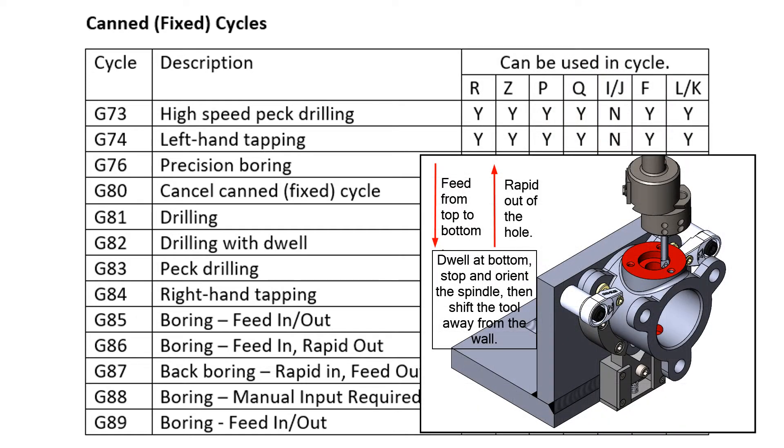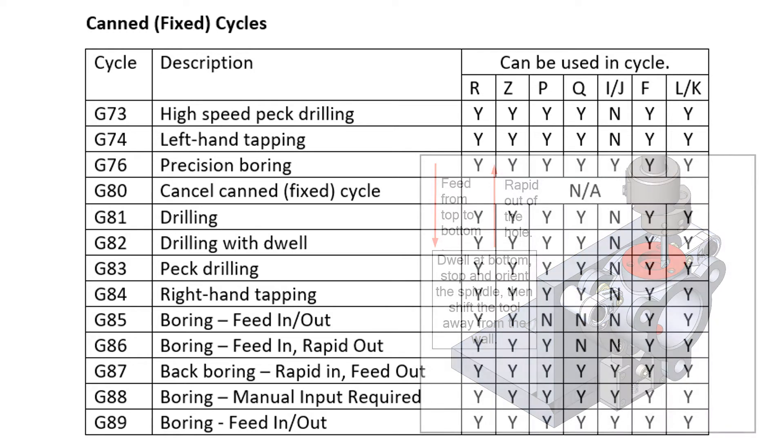The G76 precision boring cycle will feed the boring tool from above the hole to the bottom of the hole, dwell, then stop the spindle, orient it and move away from the wall by the Q or I and J amount and then rapid out of the hole. This cycle will ensure there is no scratch on the wall of the bore.